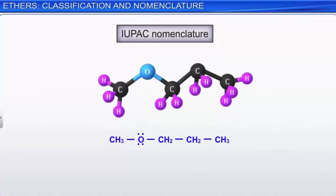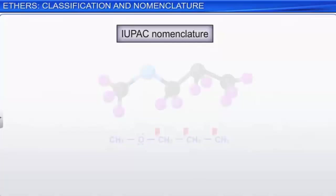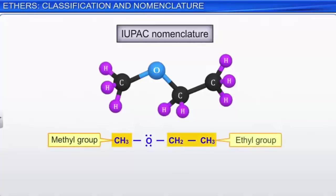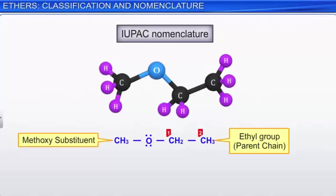IUPAC rules for ether nomenclature are based on describing ethers as alkoxy-substituted alkanes. The larger group is considered the parent hydrocarbon, and a number gives the location of the alkoxy substituent. For a molecule with a methyl group and an ethyl group, the ethyl group is the parent chain with a methoxy substituent, giving the IUPAC name methoxyethane.